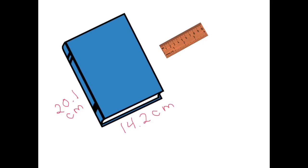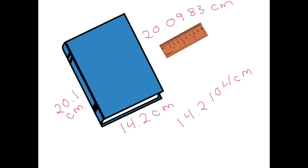However, if I were to tell you that the width of this book is 14.2104 centimeters and the height is 20.0983 centimeters, I'm essentially claiming to measure something that's not really possible with this ruler. I can't measure to this level of precision with this measuring device. So we don't want to report digits in the thousandths or ten-thousandths place because they're not significant — reporting them implies a precision we haven't actually achieved.